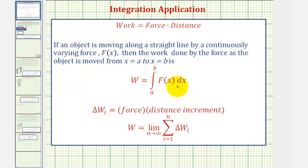To understand why this works, if we consider one increment of work, or in our case, the amount of work required to pump one disk of water over the top, it would be equal to the force times the distance increment. As we find more and more increments of work and then sum those increments, it would approach the total work. Therefore, the work is equal to the limit as n approaches infinity of the sum of delta w sub i from i equals one to n. And this limit gives us our definite integral.